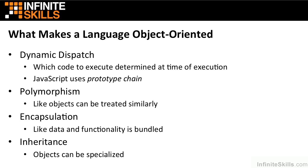Dynamic dispatch determines which code is to be executed at any given time. Polymorphism allows like objects to be treated similarly. Encapsulation allows like data and functionality to be bundled together, and inheritance allows objects to be specialized or generalized.